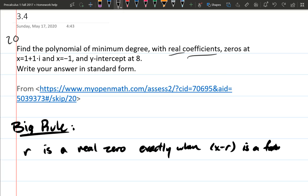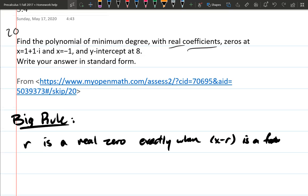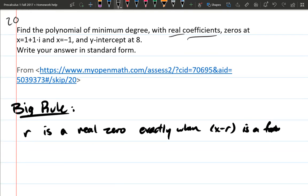If you have 1 complex zero and you have real coefficients, the conjugate pairs theorem tells you you have to have the conjugate. So even if it's only 1 plus 1i, you also have to have 1 minus 1i.